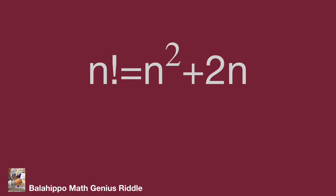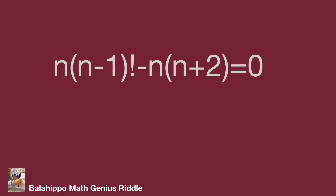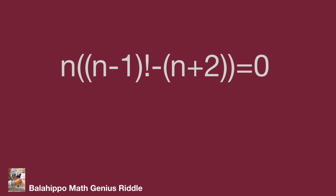Back to the question: n factorial equal to n squared plus 2n. Rewrite the left side as n times (n minus 1) factorial. Rewrite the right side, n squared plus 2n, as n times (n plus 2). Then move both items to the same side of the equation and factorize as n multiplied by the bracket quantity (n minus 1) factorial plus (n plus 2) bracket, equal to 0.